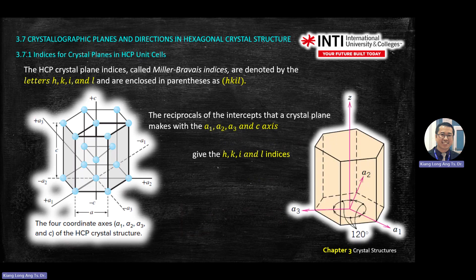When we analyze for HCP, we will convert this diagram into this form. We will draw our base center; origin will be at the base, pointing A1, A2, A3. Just now the statement: 120 degrees — 360 divided by 3 — each axis to axis will be 120 degrees. And the C will be going up.